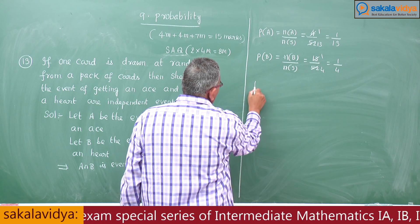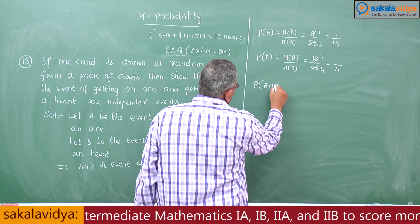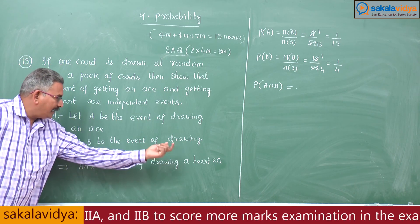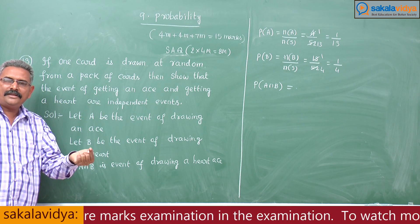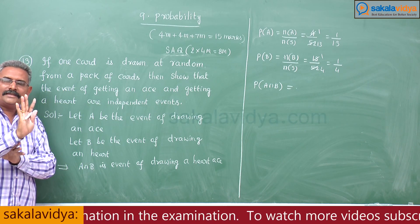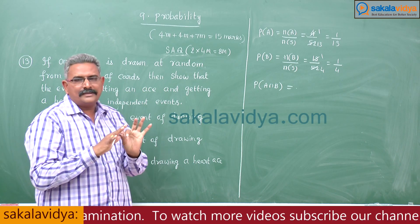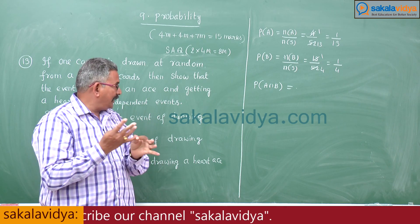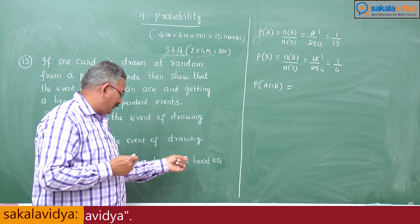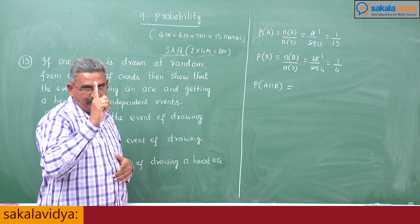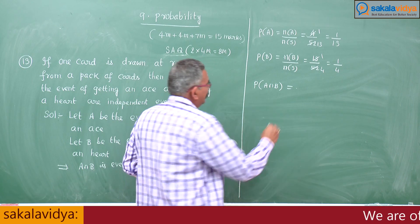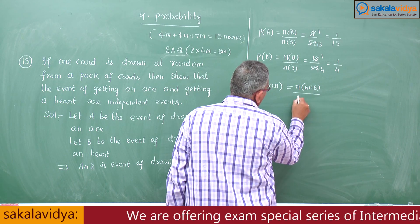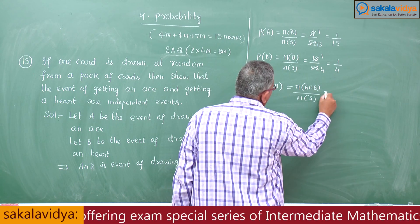Now let us find out P of A intersection B. P of A intersection B means a heart ace. How many heart aces will there be? Out of 4 aces there will be 1 spade ace, 1 diamond ace, 1 club ace, and 1 heart ace. So that means only 1 possible case. Therefore, N of A intersection B by N of S equals 1 by 52.